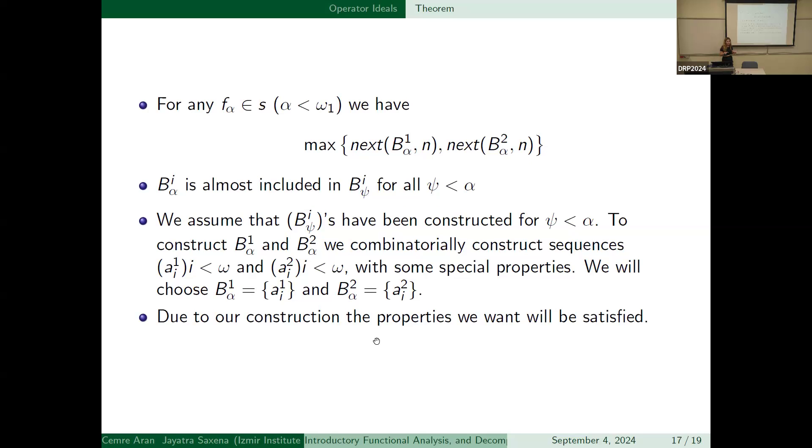For any f_α element of S, where α is less than ω_1, we have this statement and we defined the next function before. And B^i_α is almost included in this. And we assume that these B's have been constructed for this. To construct B^1_α and B^2_α, we should construct sequences, this sequence and this sequence with some special properties. We will choose some B^1_α is equal to that and B^2_α is equal to that. And because of our construction, the properties we will do will be satisfied.